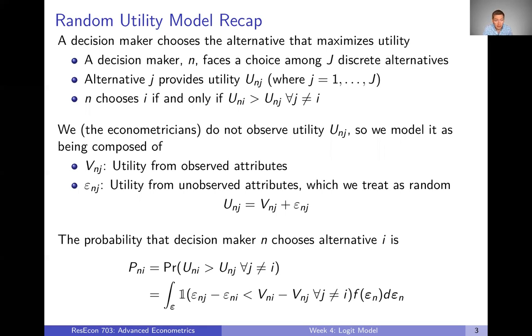Each alternative provides some utility. We say alternative J provides utility capital U sub NJ to indicate the utility to decision maker N from alternative J. And then N is going to choose I if and only if the utility from I is greater than the utility from J for all J not equal to I. In other words, just look at the utility from every alternative and pick the one that gives the most.